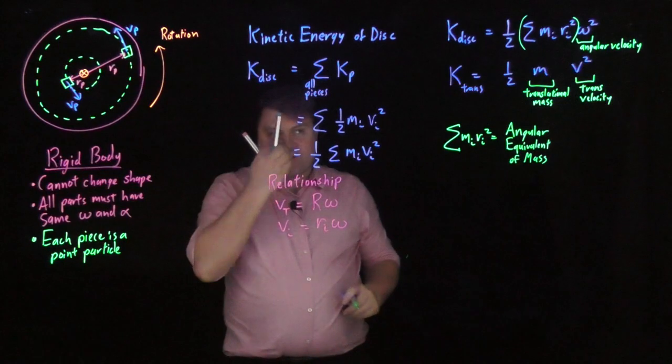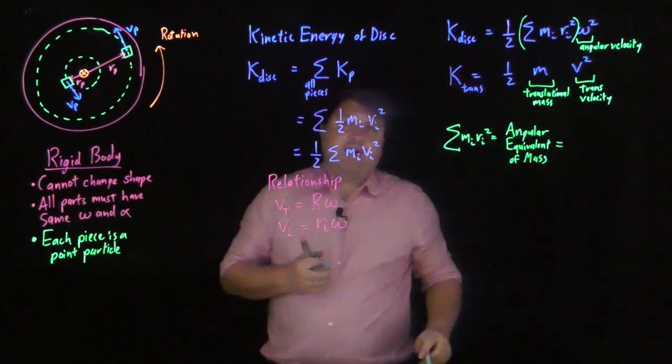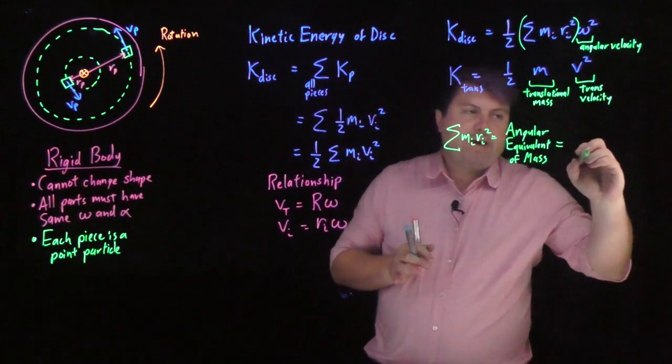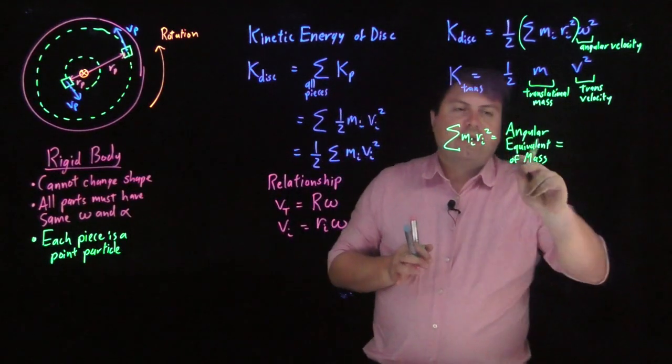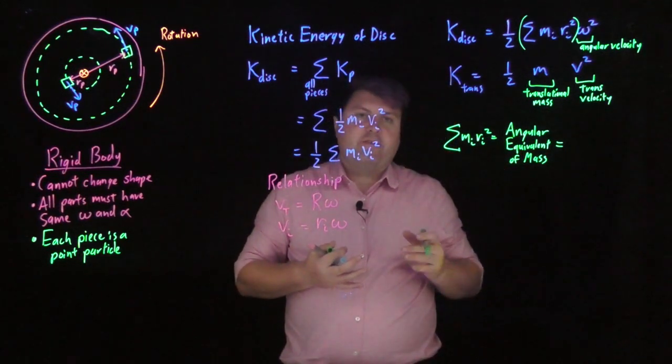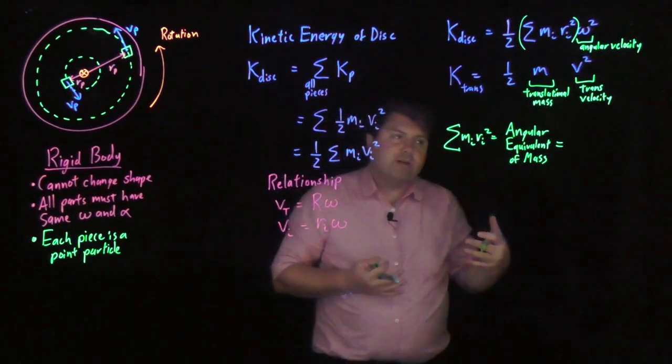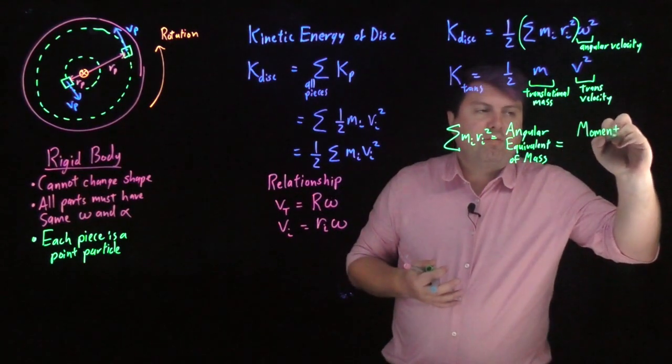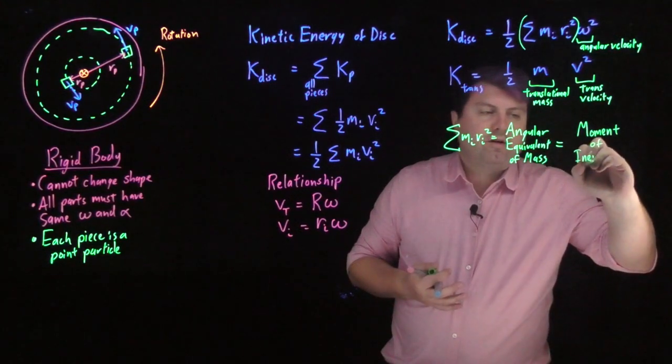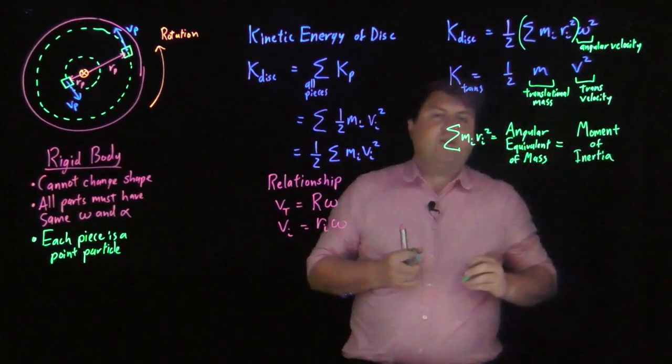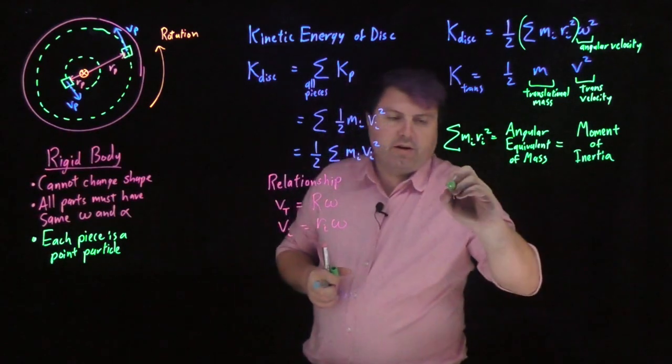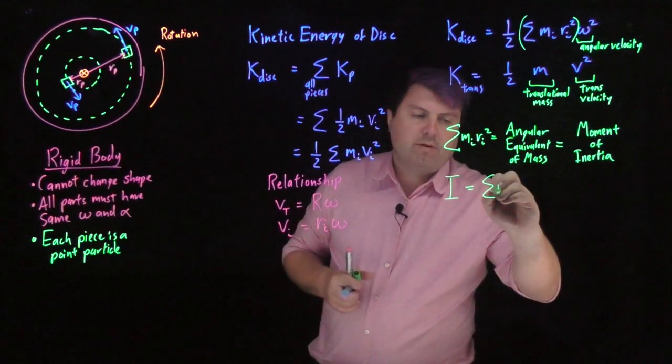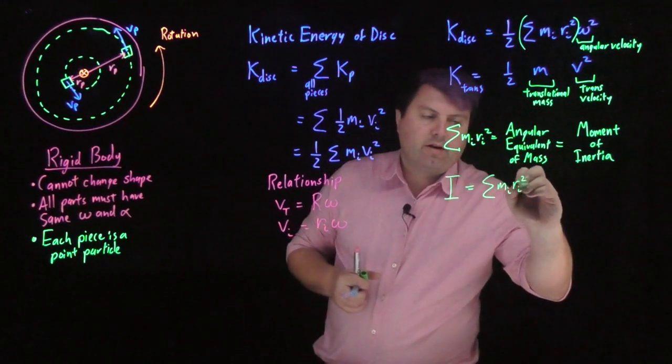But nobody actually calls it that. The problem is that the engineers got to this term first. So instead of mass, they're going to use inertia. And instead of angular equivalent, when they talk about torque in engineering, they call it a moment. So this is going to be called moment of inertia in every textbook, every video that you ever watch. And so we are going to use capital I for inertia. Moment of inertia is the sum of m_i r_i squared.